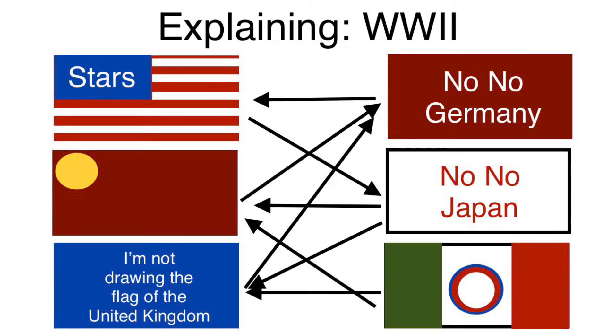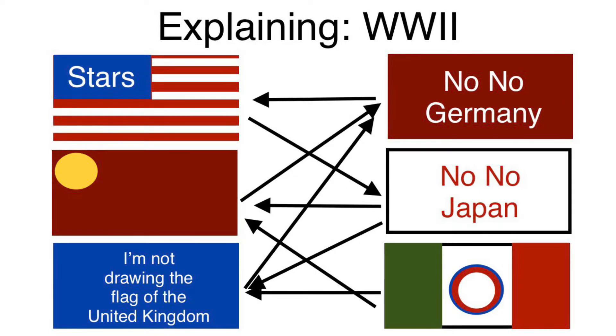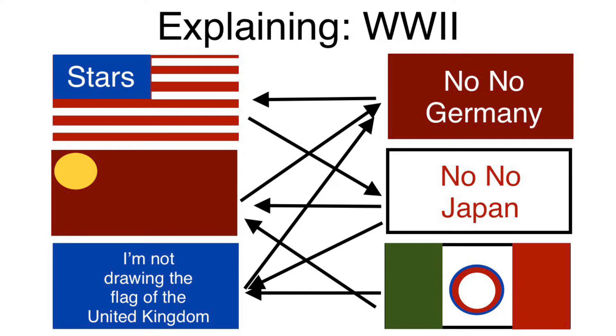This treaty put many strains on Germany, such as forcing them to cut down their military to only 100,000 troops and forcing them to demilitarize the Rhineland. This treaty would also blame the Germans for the start of World War I, and because of this, many Germans would become angered.